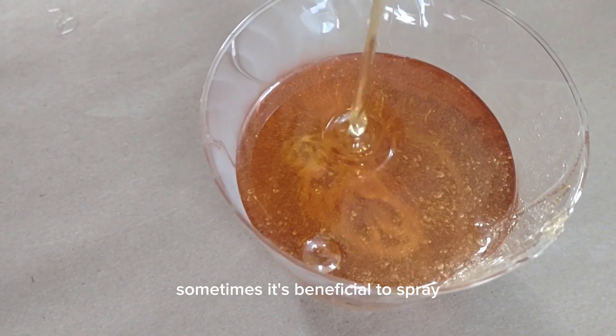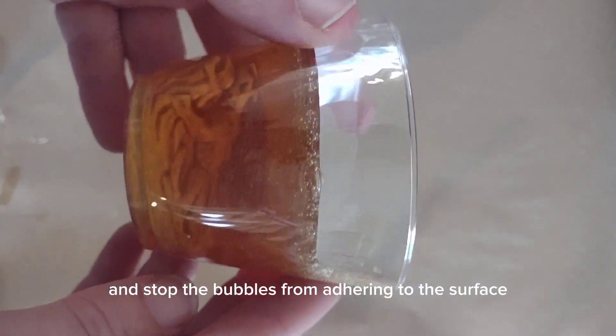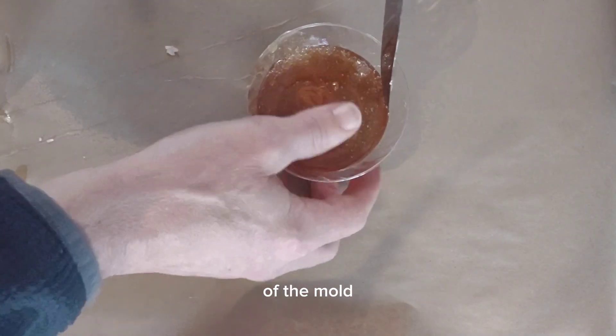Sometimes it's beneficial to spray the initial part with bubble buster to reduce the surface tension and stop the bubbles from adhering to the surface of the mold.